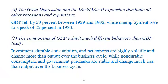Regarding the Great Depression and World War Two: expansion dominated all other periods. GDP should have fallen by 50% between 1929 and 1932, while unemployment rose to a peak of 20% in 1933. For this reason, we call this period the Great Depression.